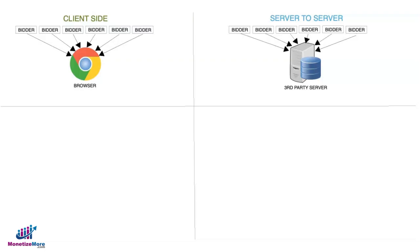Let's talk about the difference between client-side header bidding versus server-to-server, or S2S, header bidding. In client-side, ad calls are happening in the user's browser. For every bidder or ad network that you add, it also triggers an additional call every time the user loads the page.